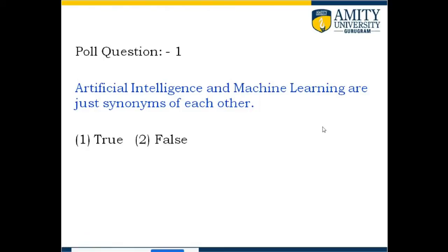Before I move to the next slide, please take a small poll with a simple question: 'Artificial intelligence and machine learning are just synonyms of each other.' This is to check how much you know about these two terminologies. The correct answer is false. Artificial intelligence is a different thing. Machine learning is a different thing, but machine learning is a subset of artificial intelligence. You cannot say both are synonyms of each other.